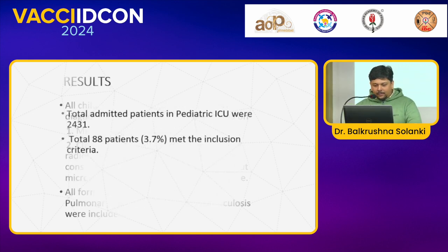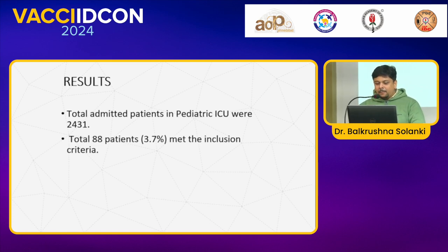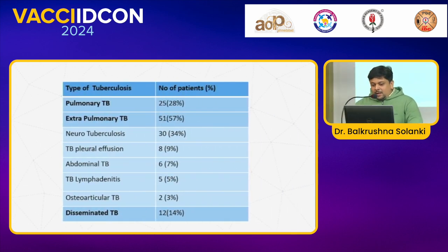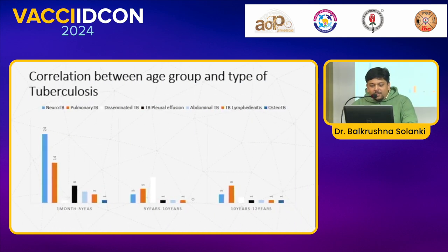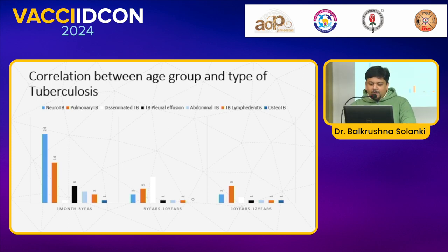Total admitted patients in pediatric ICU were 2431. A total of 88 patients, which is 3.7%, met the inclusion criteria. Male to female ratio was 1.4 to 1, and age distribution is shown on the chart. The number of patients diagnosed with different types of tuberculosis is shown percentage-wise on the slide. Neurotuberculosis was more common in the age group 1 month to 5 years; disseminated tuberculosis was more common in the 5 to 10 years age group; and pulmonary TB was most commonly found in the 10 to 12 years age group.